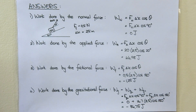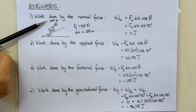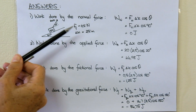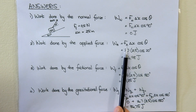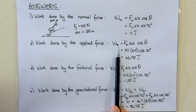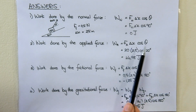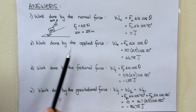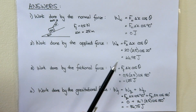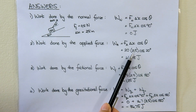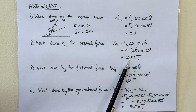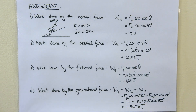Second question: work done by the applied force. The applied force is 20 newtons and the displacement up the slope is 2.5 meters. Work done by the applied force equals F applied times delta x times cos of the angle between them, which is 20 degrees. Substituting: 20 times 2.5 times cos of 20 gives your answer. Remember, work is a scalar so we do not include direction.